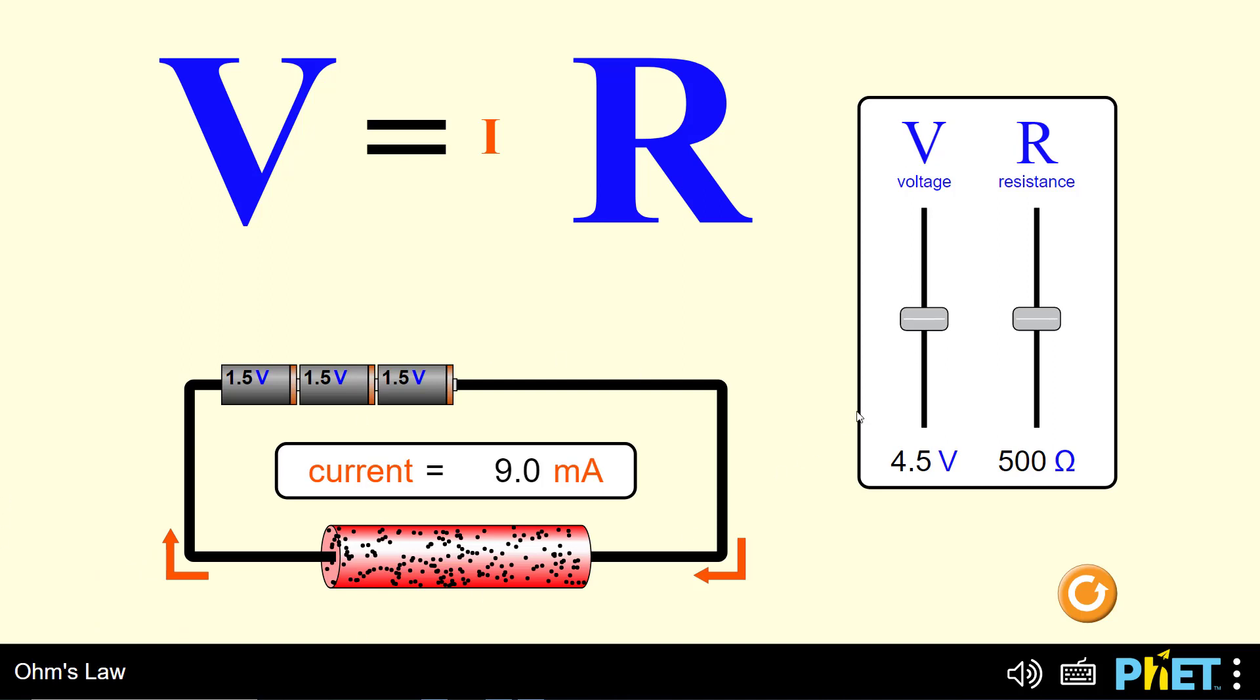As we can see in the existing circuit, I have a source with a value of 4.5 volts and a resistance of 500 ohms. The value of the current is 9 milliamperes.